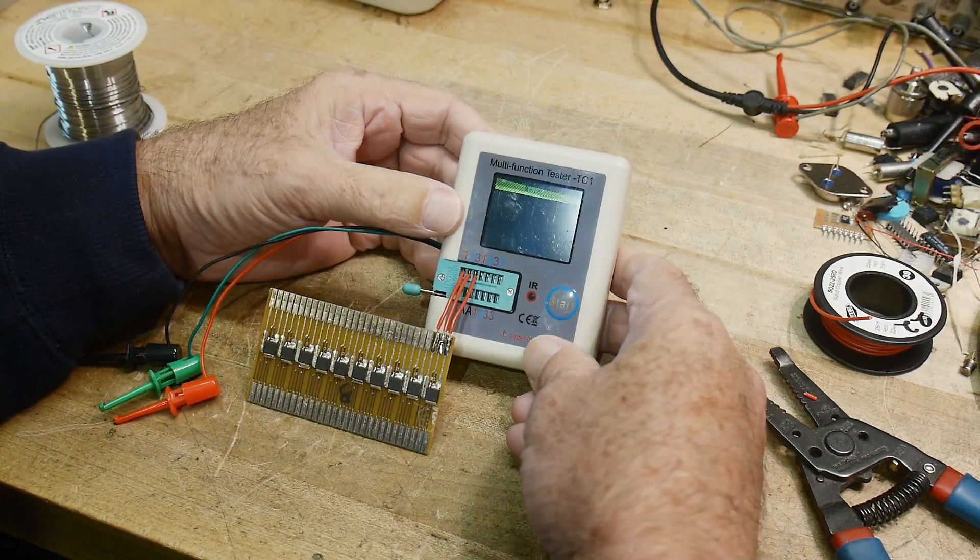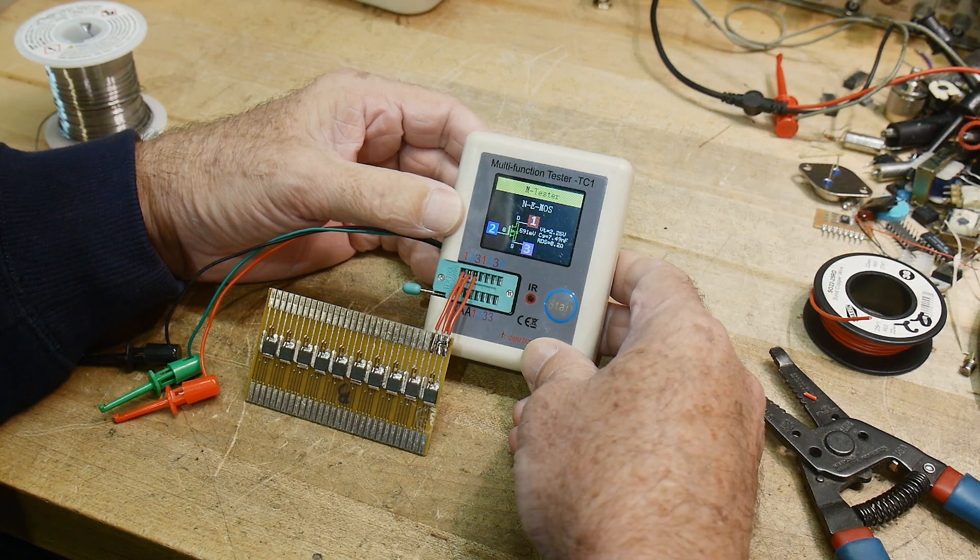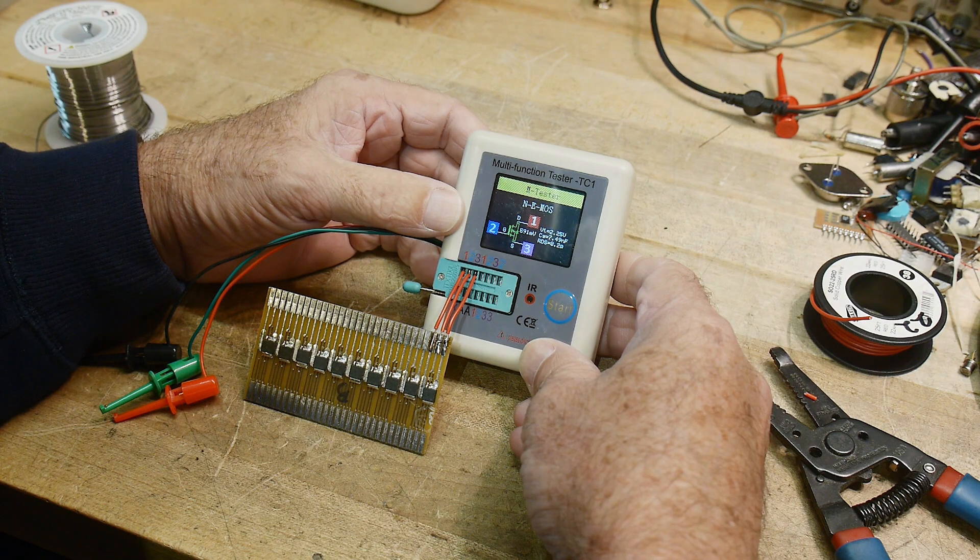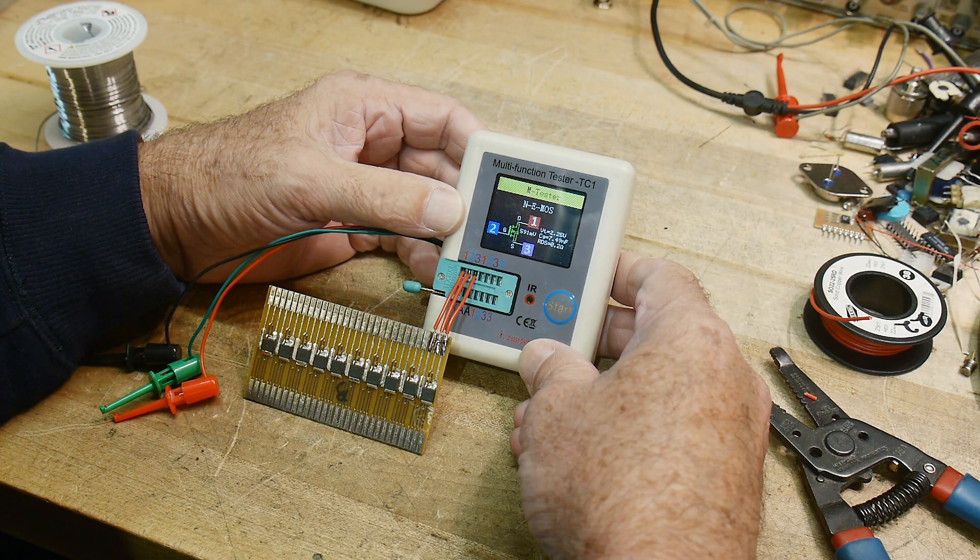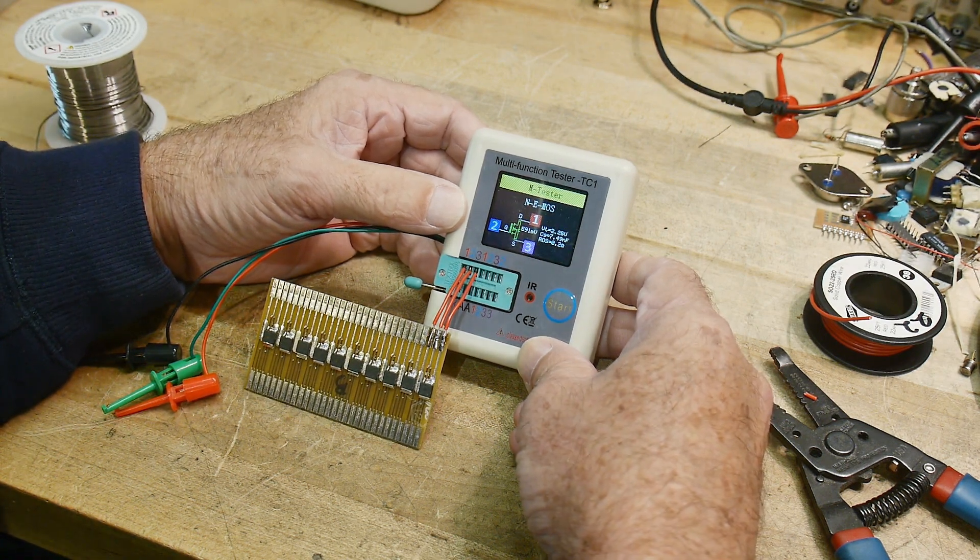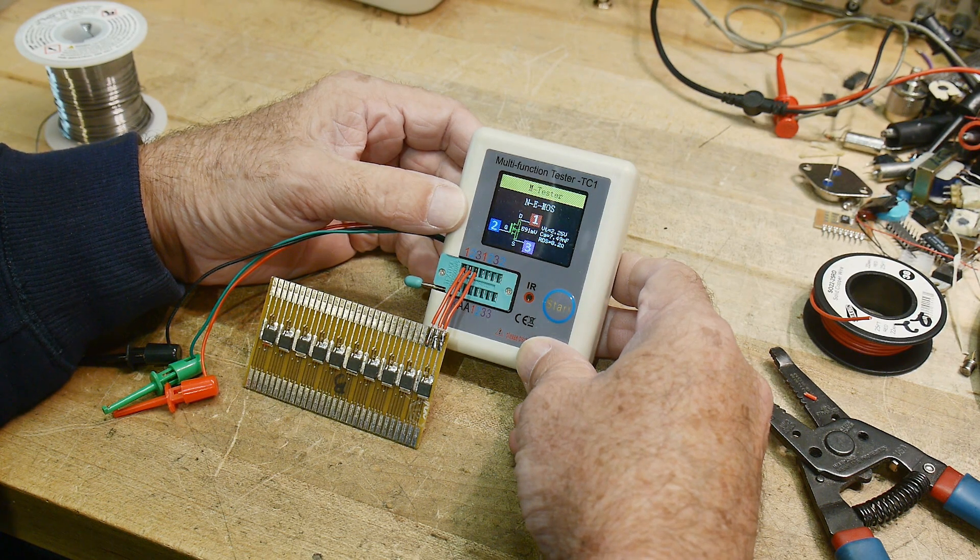Let's turn this on. Sure enough, it's an EMOS, 2.25 volt turn on, 0.2 ohms resistance. Yeah, they're little FETs, so that's pretty cool. Now what were they for, what did they do? Those are all mysteries.